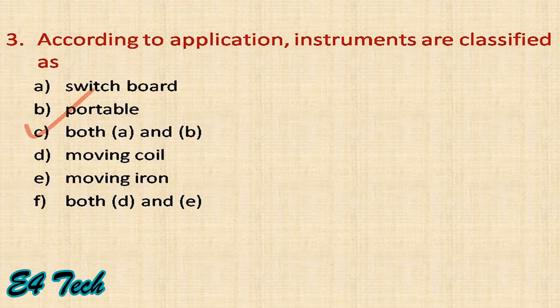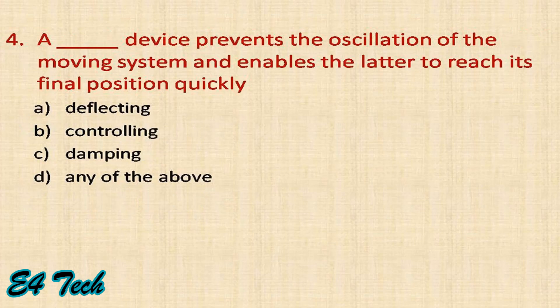A dash device prevents the oscillation of the moving system and enables the pointer to reach its final position quickly. The question is: if we add a damping device to the moving system, the pointer becomes stable.